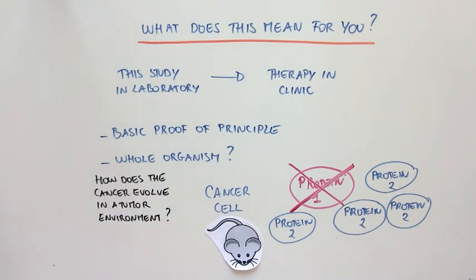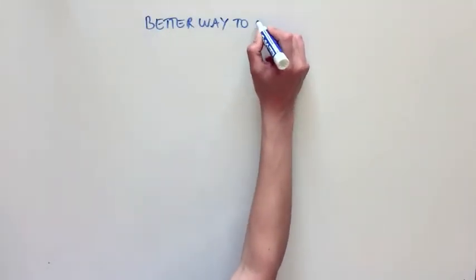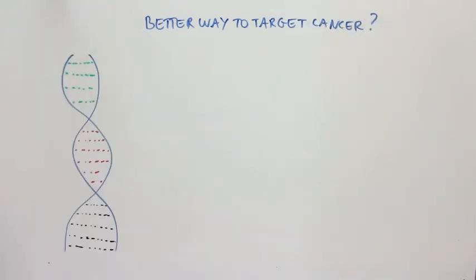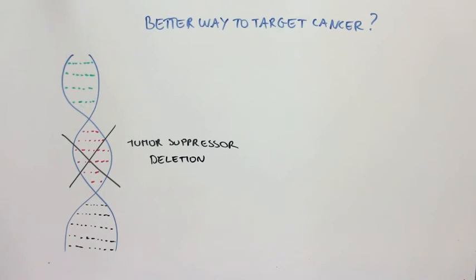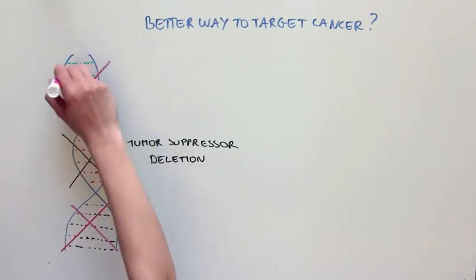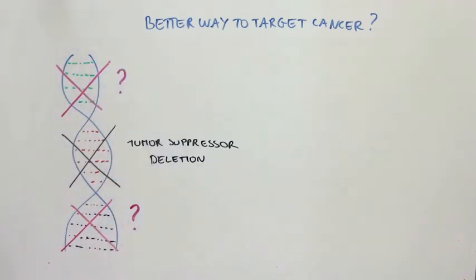For now, this study provides one of the first pieces of evidence that maybe the best way to target cancers that are driven by the deletion of tumor suppressors is by looking at what passenger mutations have occurred in the deletion event and attempt to target specifically the cancer cell using this type of collateral damage.